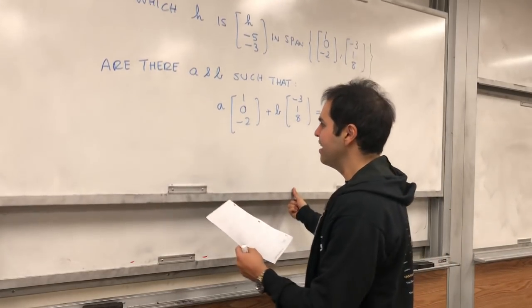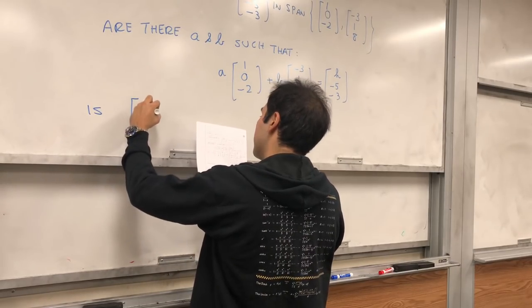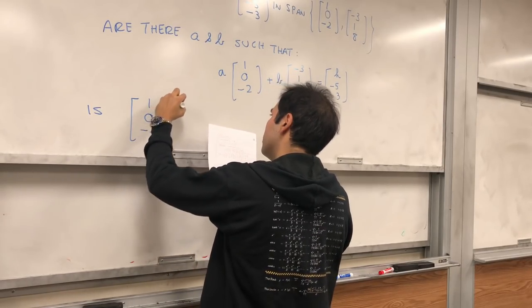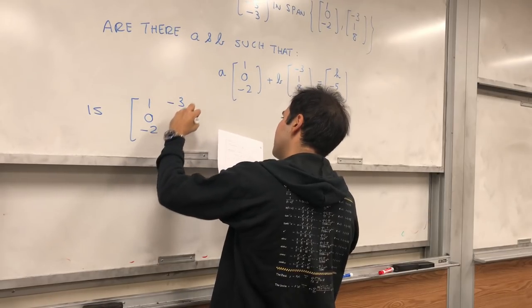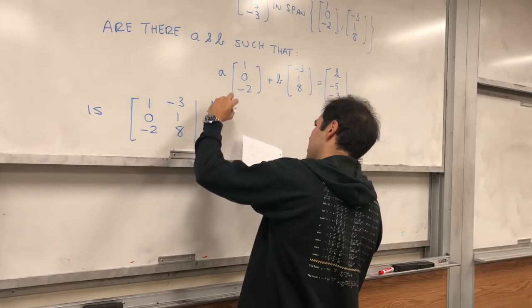So the question is then, is this system [1, 0, -2; -3, 1, 8; h, -5, -3] consistent?